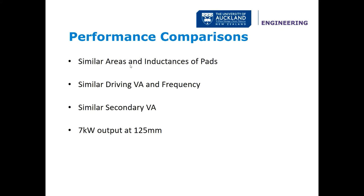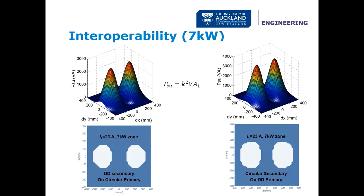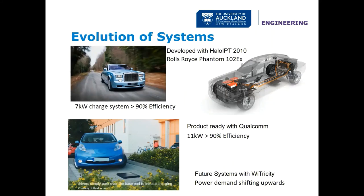We can compare the circular and double D with similar areas, inductances, and VA for a seven kilowatt output. The circular system has a seven kilowatt zone about half the size of the double D's, which is more oval-shaped. They can also be made interoperable: because the circular produces a vertical field at the center and the double D produces a horizontal field at its center, they are coupled with each other when offset. These systems have been shown to achieve much better than 90% efficiency for seven kilowatt systems, with 11 kilowatt systems and higher being pursued going forward.